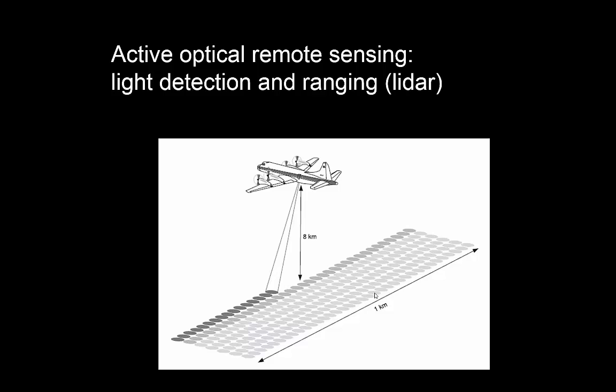What you can see here is the typical configuration of a LiDAR system on an airplane, where as the plane moves forward, a LiDAR pulse — a pulse of light, a beam of light — is sent to the Earth's surface and comes back to the airplane.